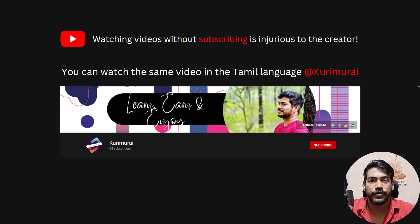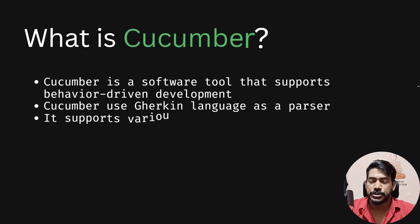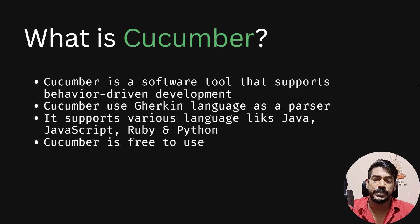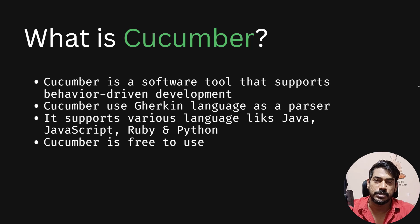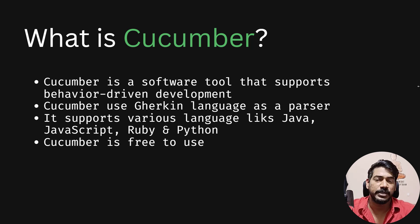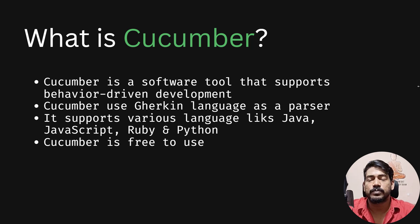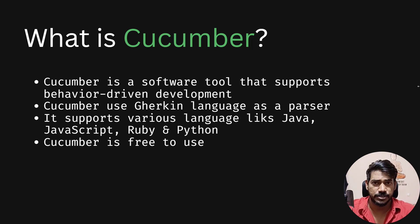So what is Cucumber? Cucumber is a software tool that supports Behavior Driven Development. What is BDD? We'll come to that in a moment. It uses a parser language known as Gherkin. It is initially built in Ruby, but it has different bindings like Java, JavaScript, Python, and C#. In C# mostly we use SpecFlow — both are similar but with some differences.